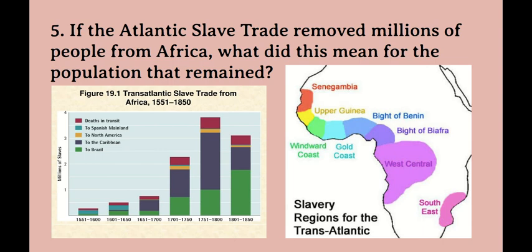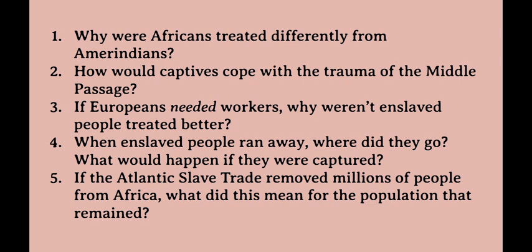When you remove 10 million, mostly men, the societies become vulnerable. Without men of those ages you don't have soldiers to defend yourself; you have fewer workers and economies suffer. Families would suffer without fathers, brothers, and uncles. Women would have to do all of the remaining jobs, all of the remaining child care, all of the remaining everything. And it had knock-on effects because subsequent generations were smaller because there were simply fewer men to father children. These are the five questions that we answered today.